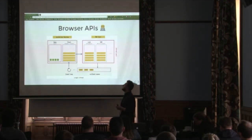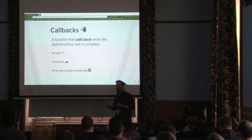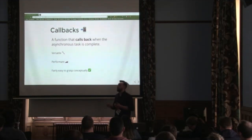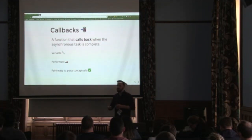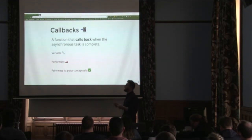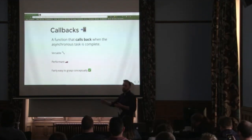The JavaScript runtime needs to reach out to the web APIs and say, let me know when you're done. So how do we write asynchronous JavaScript? The easiest and oldest version is callbacks — a function that calls back when the asynchronous task is complete. Let me know when X is finished. These are versatile — they're just functions — and for the same reason they're performant with low overhead. They're fairly easy to grasp conceptually.